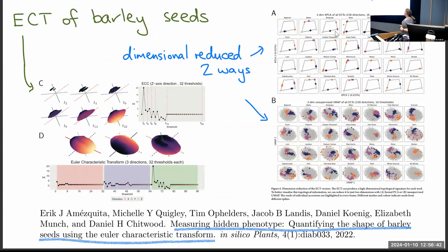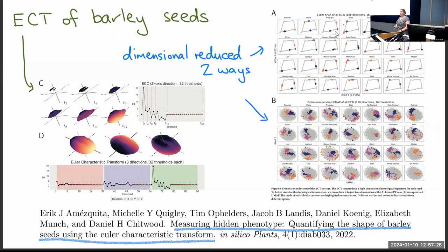There are some cool applications. A group at Michigan State used these topological transforms to study the shape of barley seeds. There are many varieties grown in different environments around the world, and the seed shape varies in geometrically important ways. They can distinguish varieties and have done more recent work predicting what shape would result from breeding two varieties together.